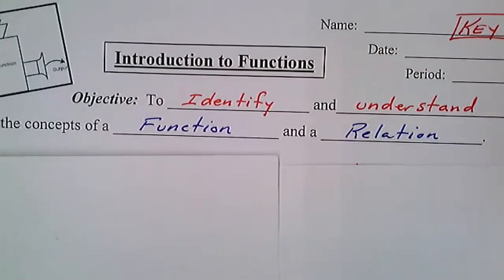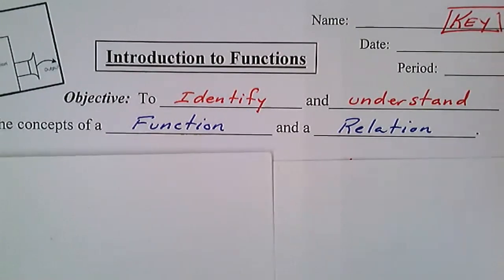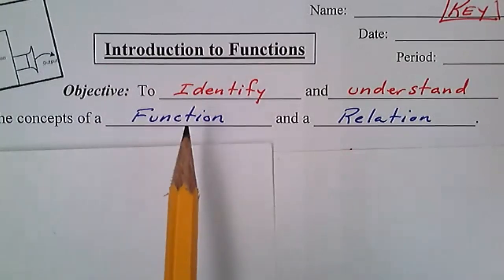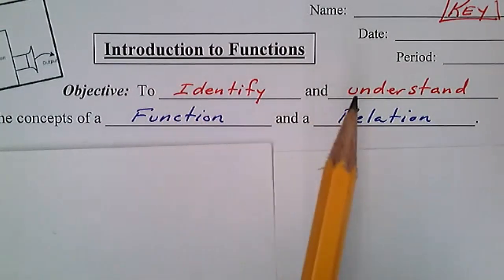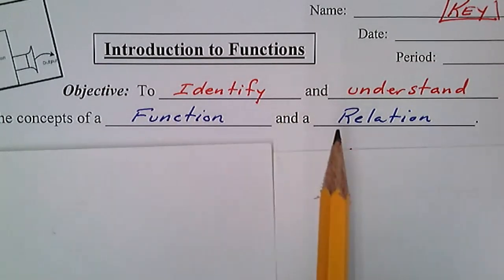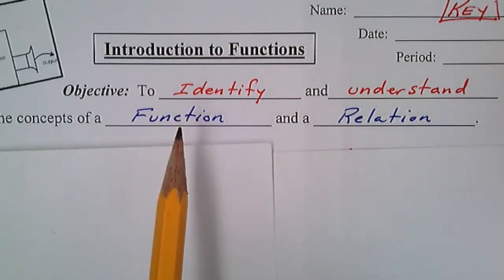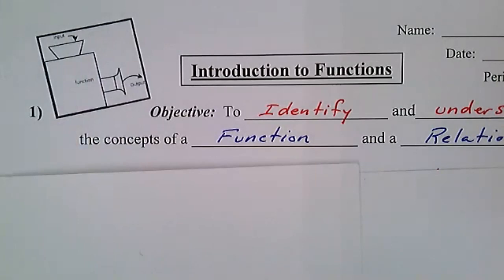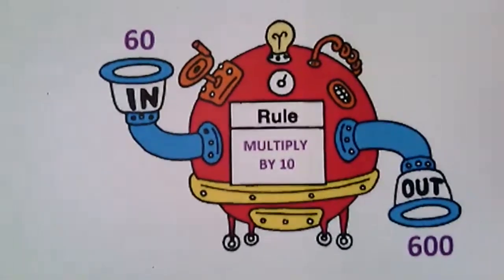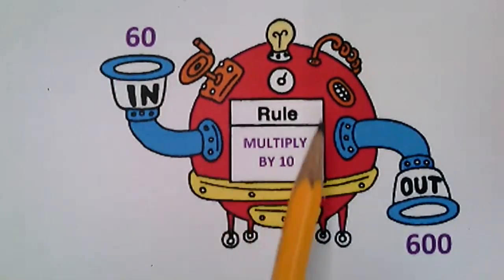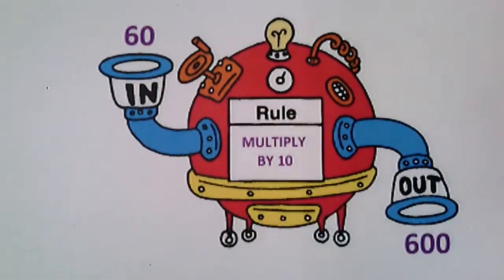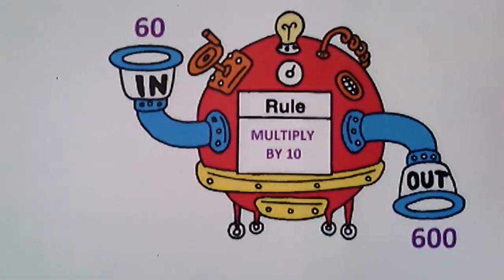I'm going to flip over to my document camera. Our objective for today is to identify and understand the concepts of a function and a relation — two new vocabulary words. When we talk about a function, a function is an input-output machine. You plug something in, it goes through whatever the math rule is, and then it comes out. The actual mathematical term for this input-output process is the word 'function.'